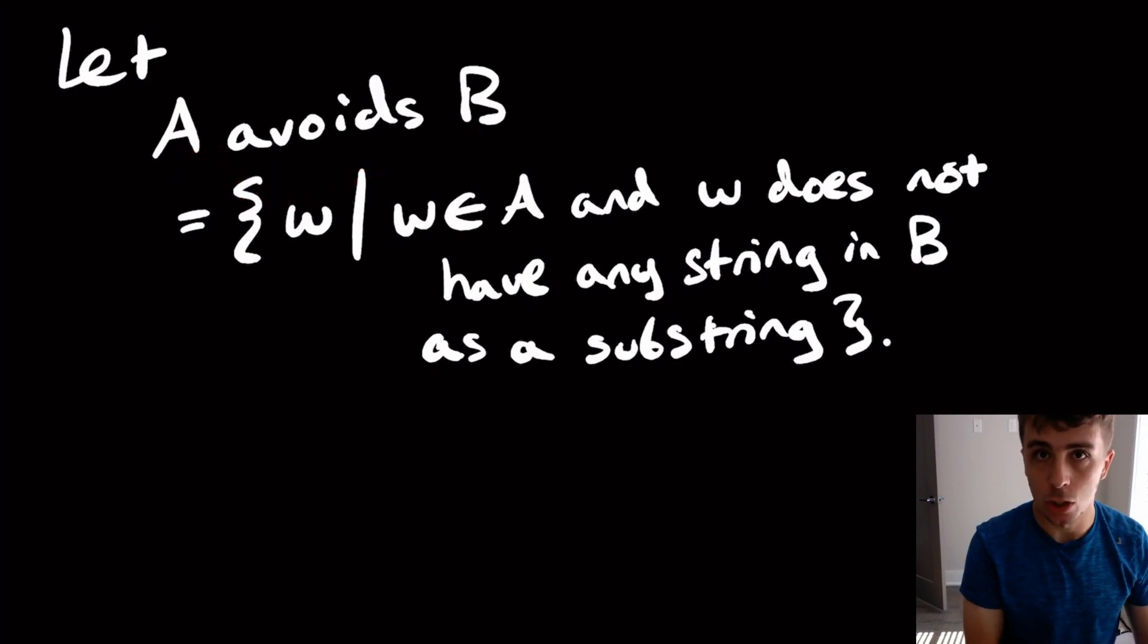We have two languages here, A and B, and we want to figure out whether A avoids B. So what is that? That's all the strings that are in A, the first language, and that string itself does not have any string in B as a substring.